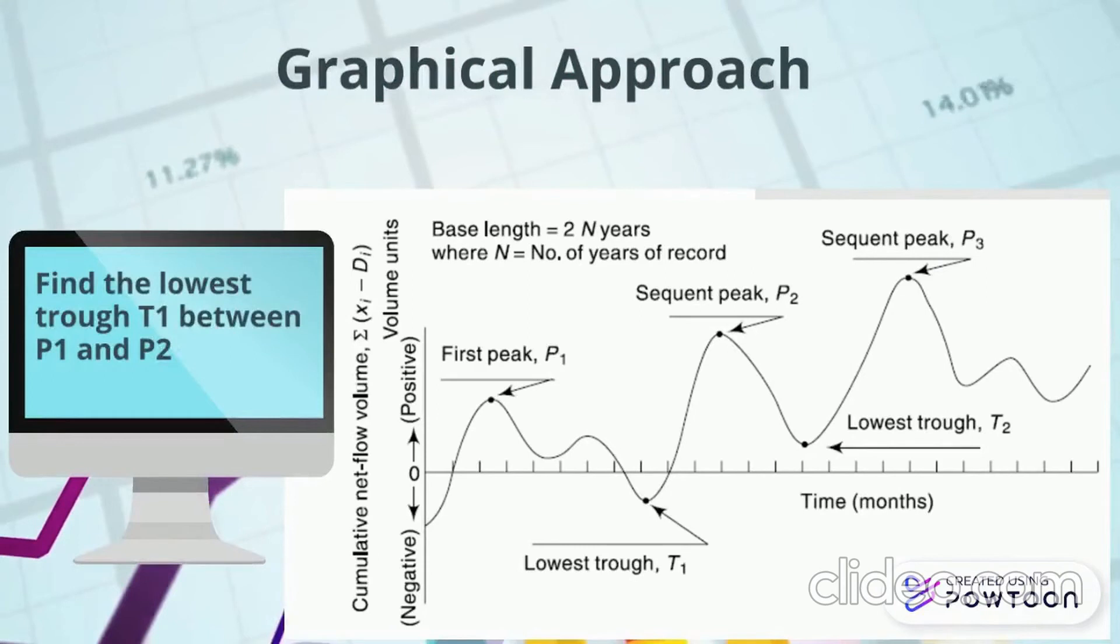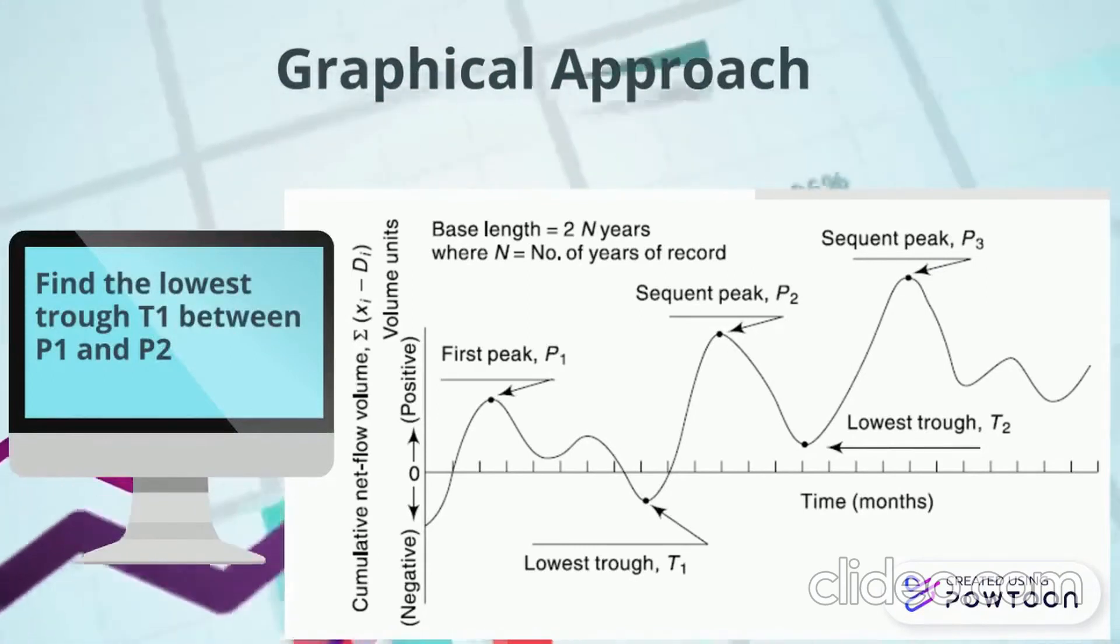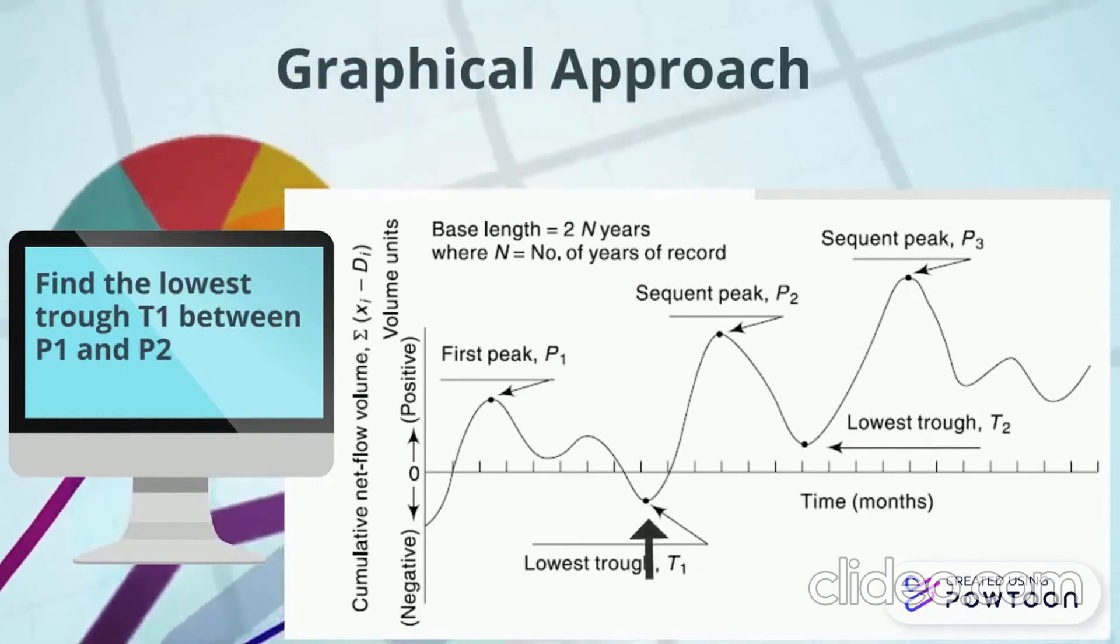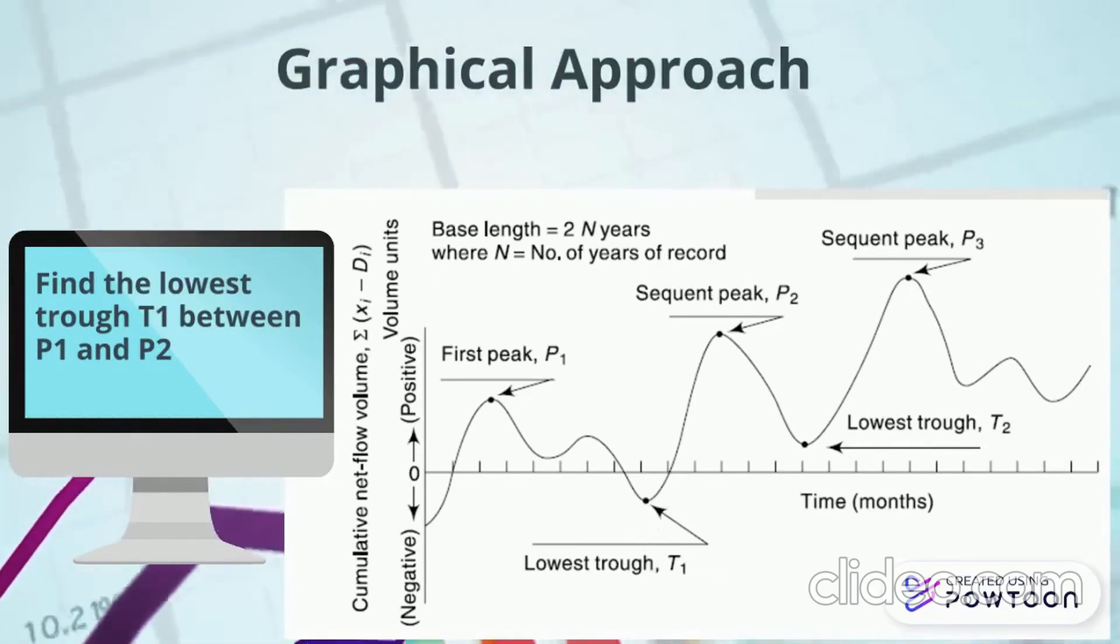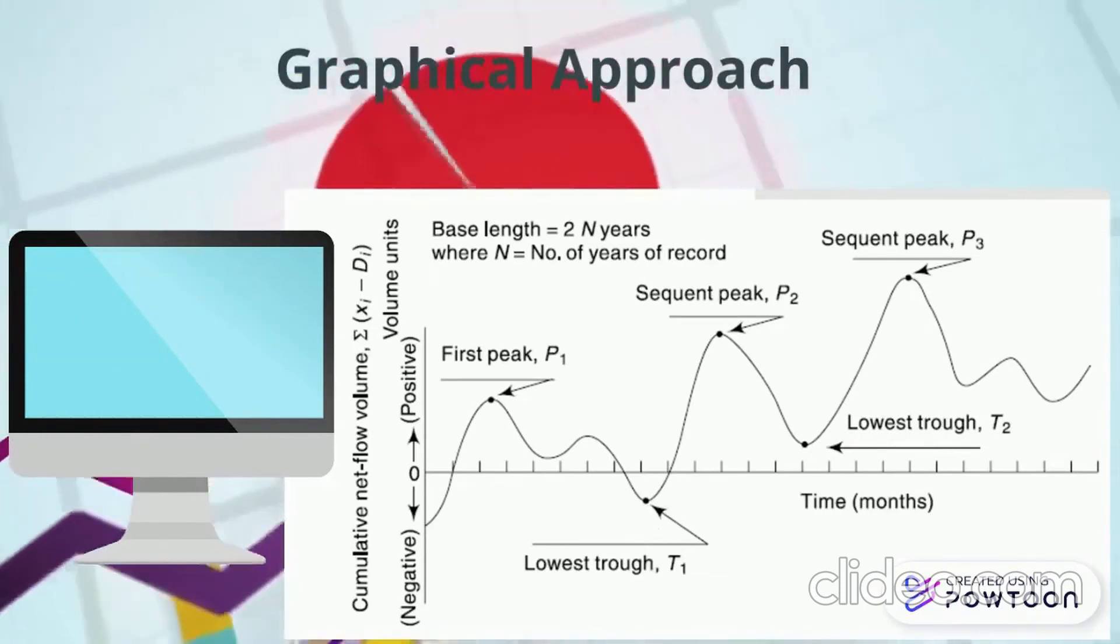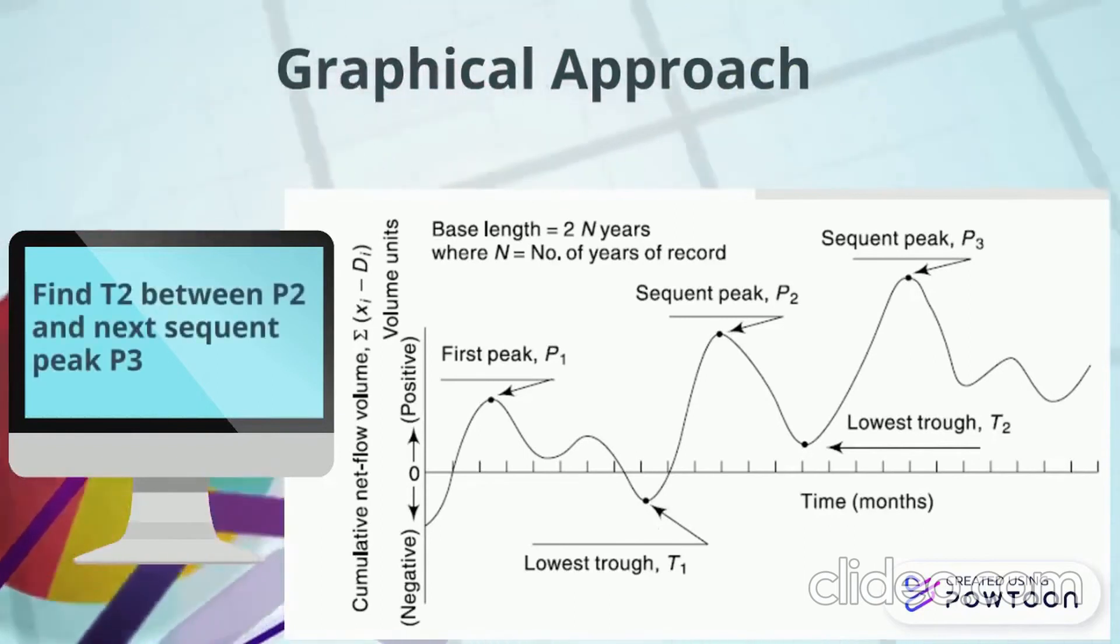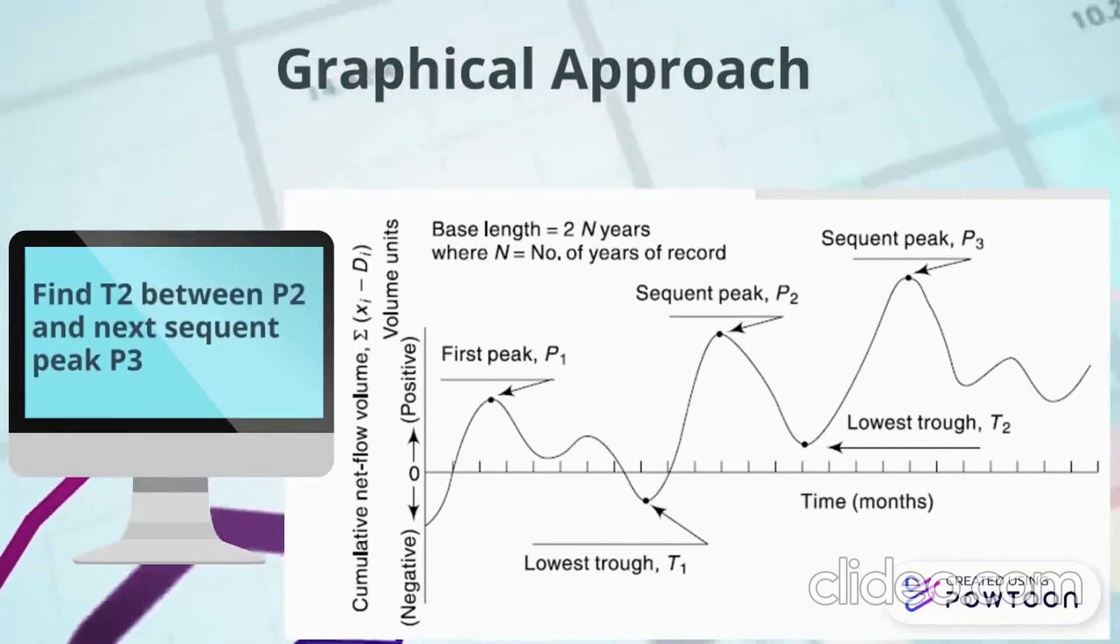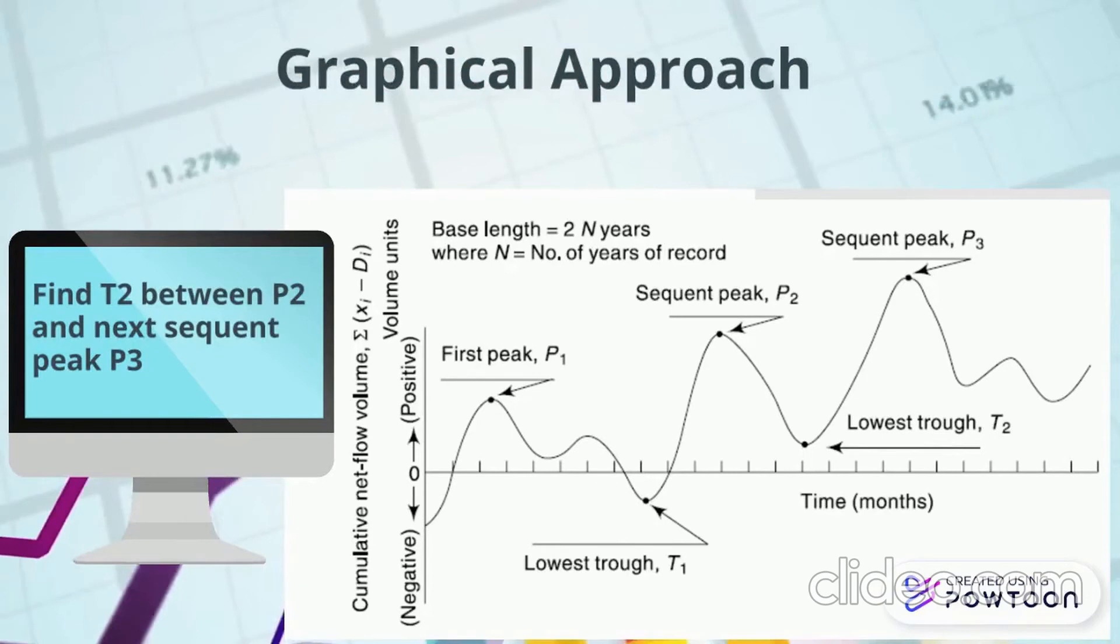You will see from this graph that the first trough is occurring between the first two peaks P1 and P2, and we will call this trough as T1. Now, the second trough T2 is occurring between P2 and P3, and say that you have J number of peaks, so P1, P2, P3 up to Pj, then you will have J number of troughs also, T1, T2 up to Tj.